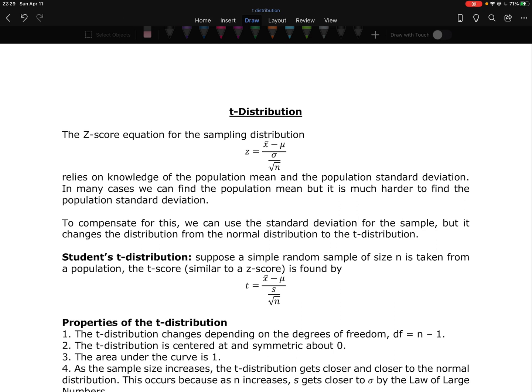We can calculate how far away from the mean we are using a t-score. So it's technically called the student's t-distribution, but we just shorthand it to t-distribution because we do that all the time in statistics. We don't like calling things by their full name. So if we take a simple random sample of size n from a population, the t-score, which is going to tell us how far away from the mean we are, similar to how a z-score works, is found by